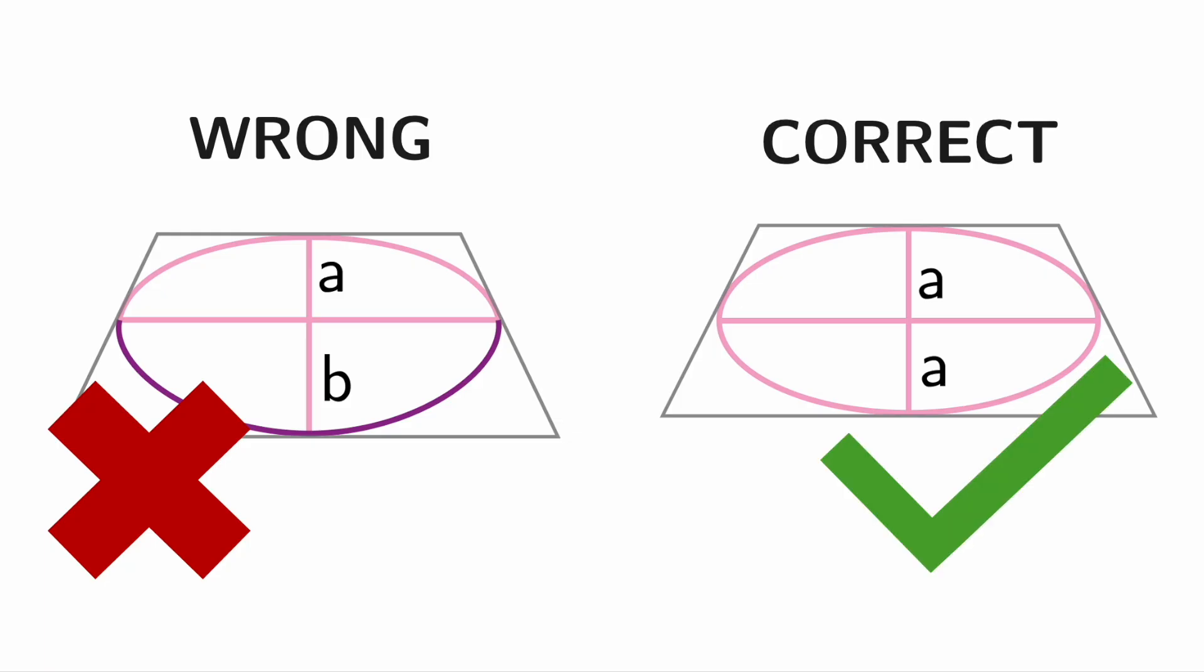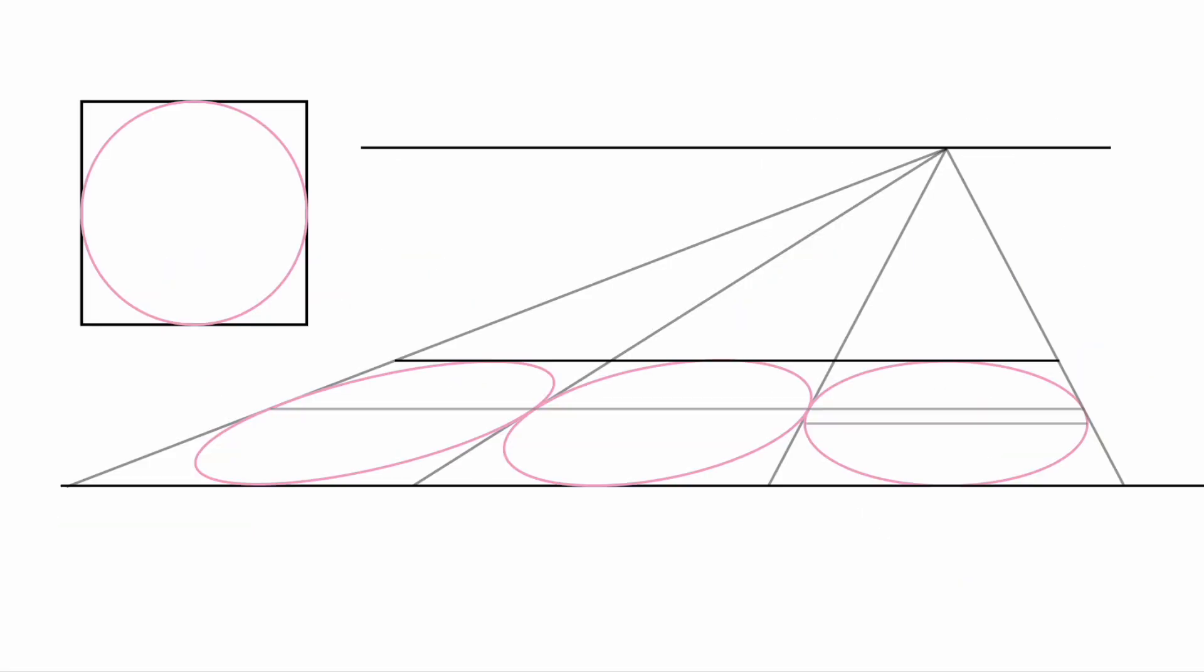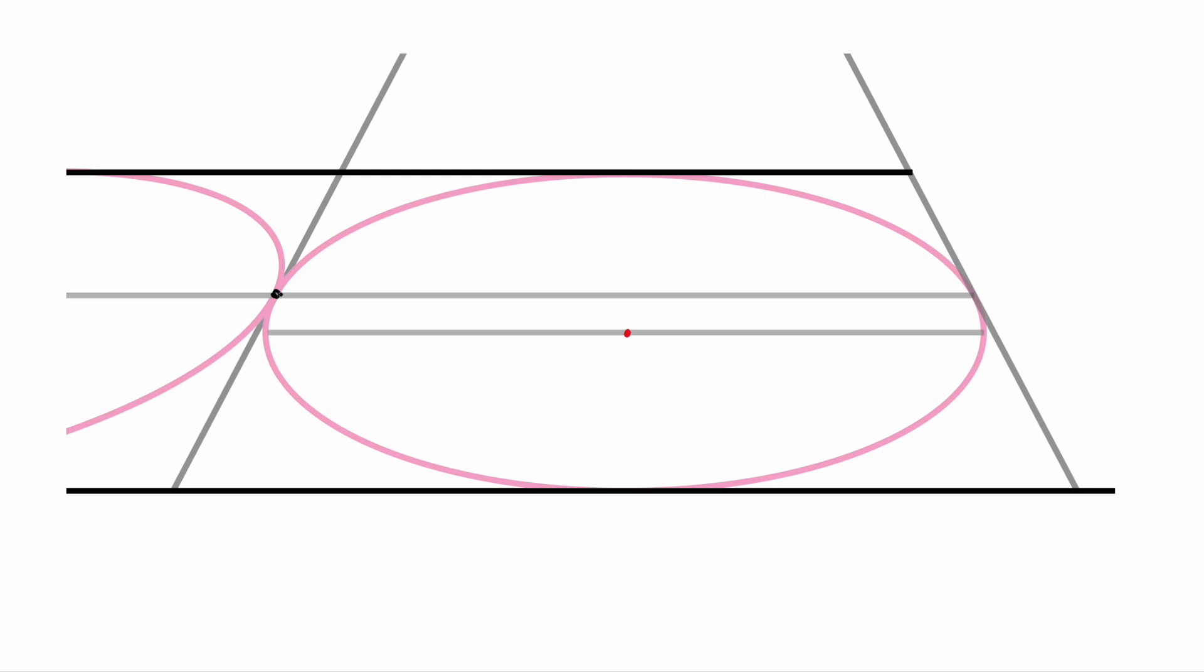But for now let's try to understand it intuitively. Let's look at the circle inscribed in a square, place it on a horizontal plane, add a vanishing point and observe the whole thing in perspective.